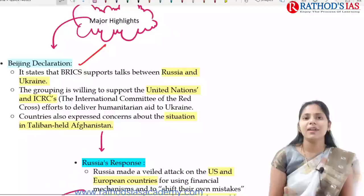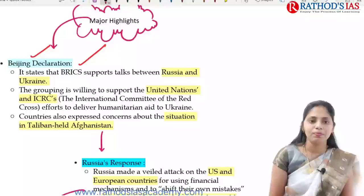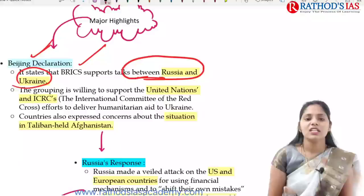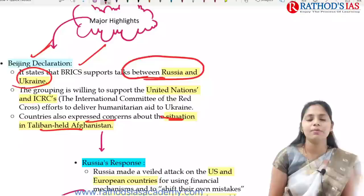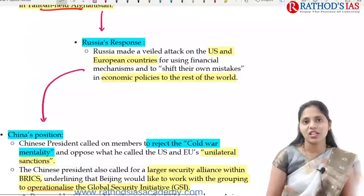Regarding major highlights, the first is the Beijing Declaration. It states that BRICS mainly supports talks between Russia and Ukraine. The group is also willing to support the United Nations and ICRC — the International Committee of the Red Cross — focusing on providing humanitarian assistance to Ukraine. Countries also expressed concerns about the situation in Taliban-led Afghanistan.